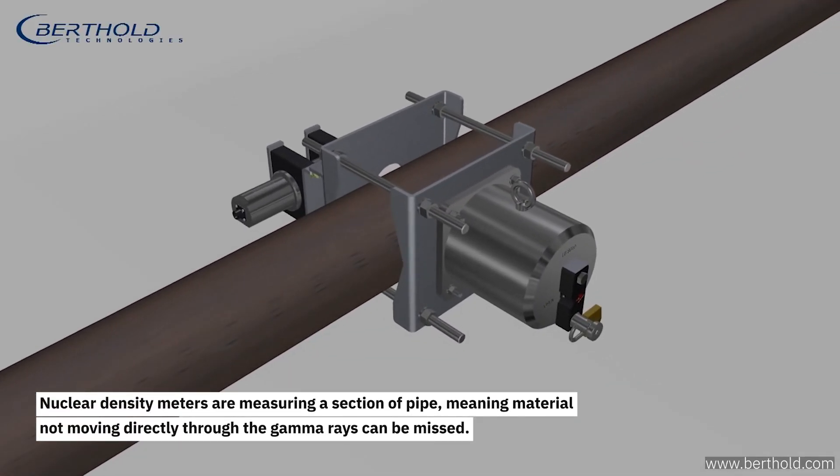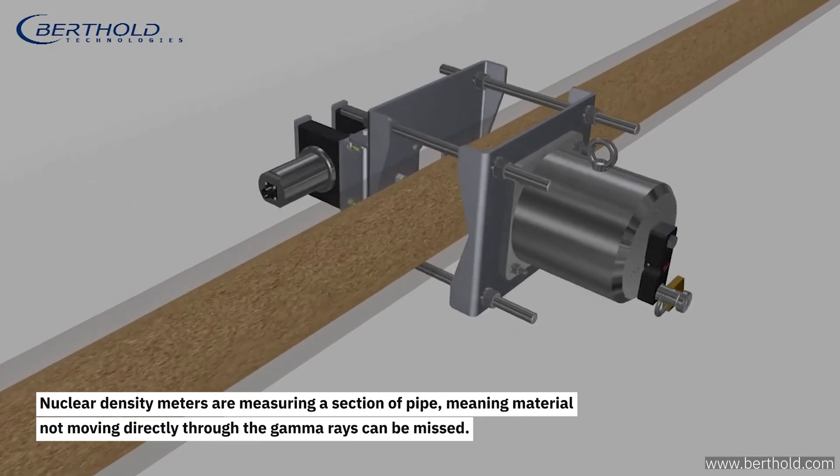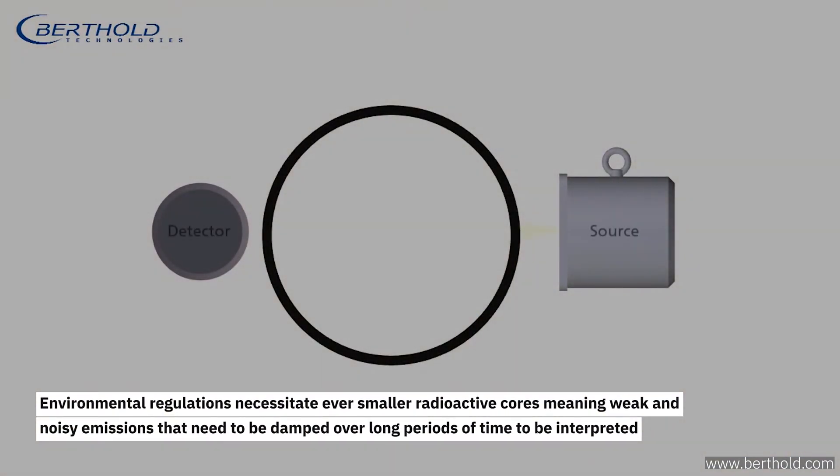Nuclear density meters are measuring a section of pipe, meaning material not moving directly through the gamma rays can be missed. Environmental regulations necessitate even smaller radioactive cores.